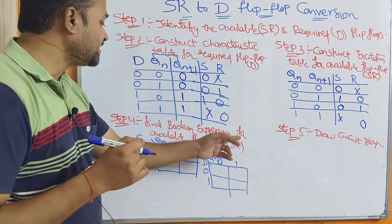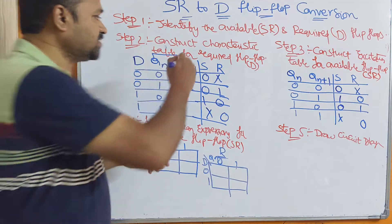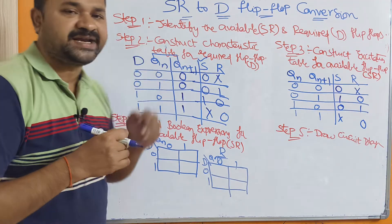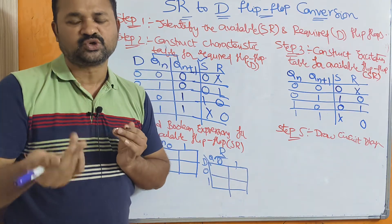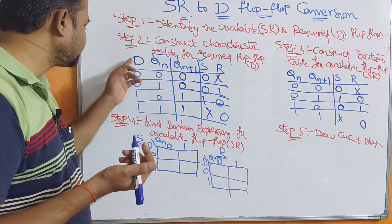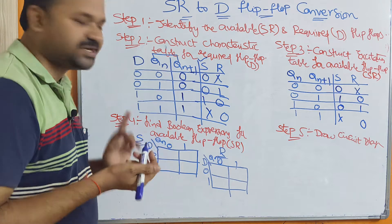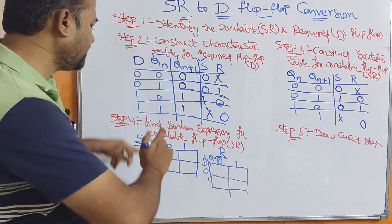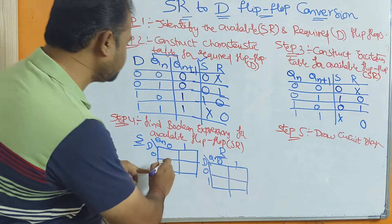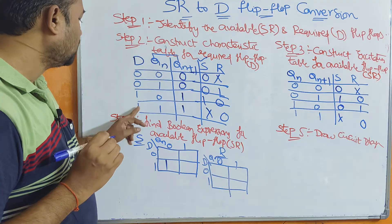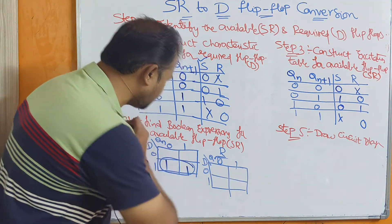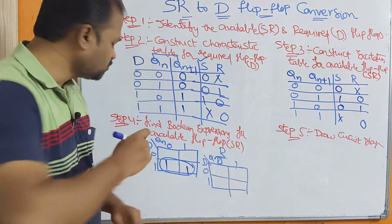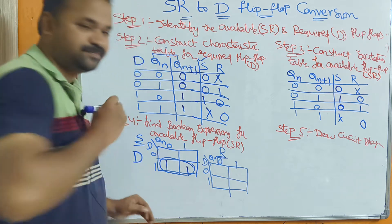Step four: find the Boolean expressions for the available flip-flop inputs S and R. The inputs are D and QN, so a two-variable Karnaugh map is used. This column represents D and this column represents QN. Observing the S column, the value 1 appears where D=1 and QN=0. Grouping that cell with the adjacent don't care, D is 1 while QN changes — so the expression for S is simply D.